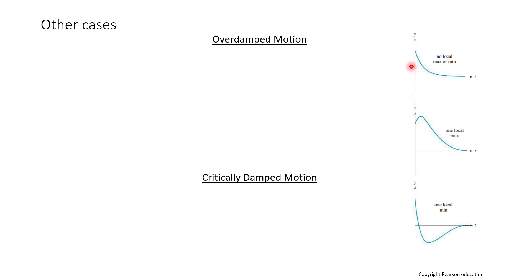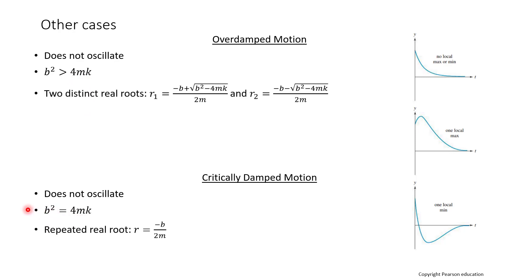And then the other two cases are overdamped and critically damped motion. And so these are some images for what those look like. And in both situations, your motion doesn't oscillate. It's considered overdamped if your b squared value is greater than four times m times k. And it is critically damped if b squared actually equals four m k. And then overdamped occurs when we have two distinct real roots, so they're different from each other. And then critically damped is when you have a real root, but it's repeated. And then we have our general solutions for both of those.